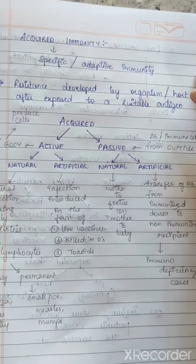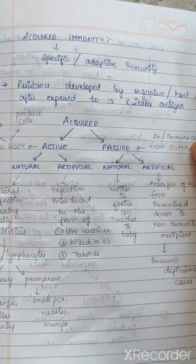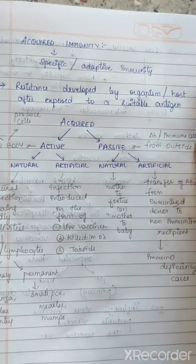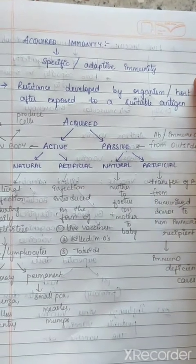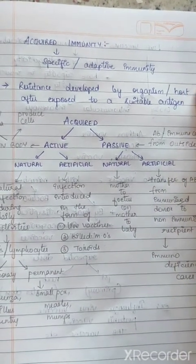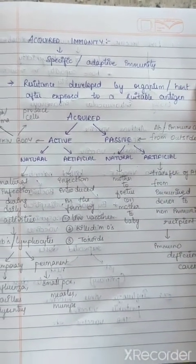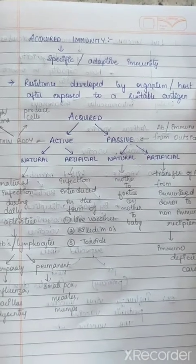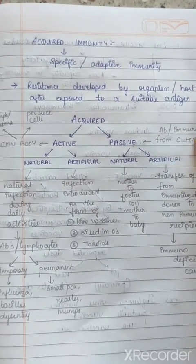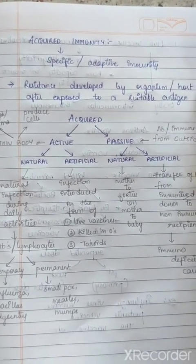Good morning dear students. Today we are going to discuss about acquired immunity. In the last class we discussed about innate immunity and the factors causing innate immunity. In this lesson we are going to learn about acquired immunity.